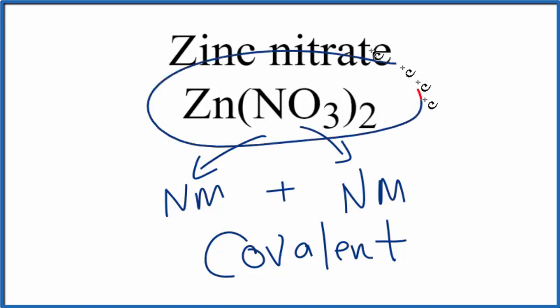But overall, because we have the positive zinc ion and then the negative nitrate ions, the compound is going to be ionic.